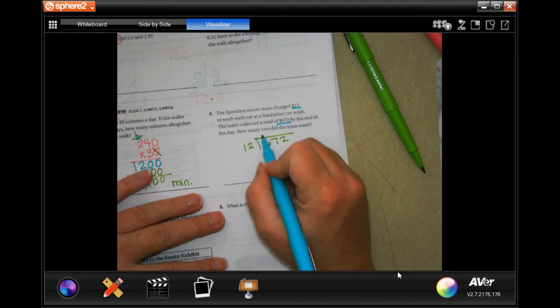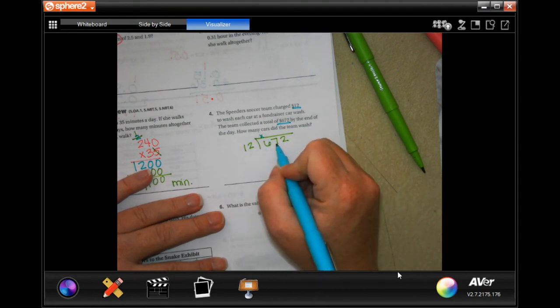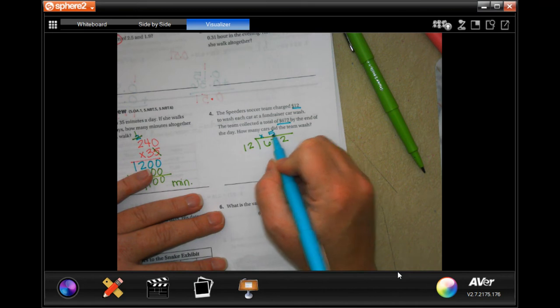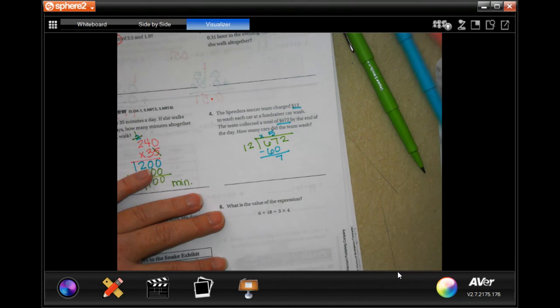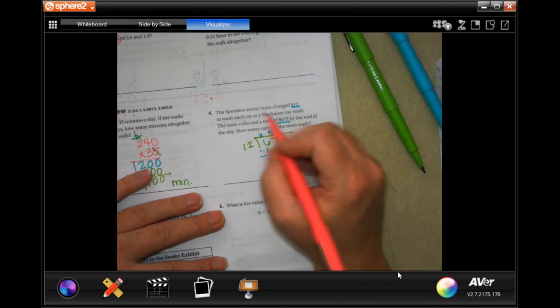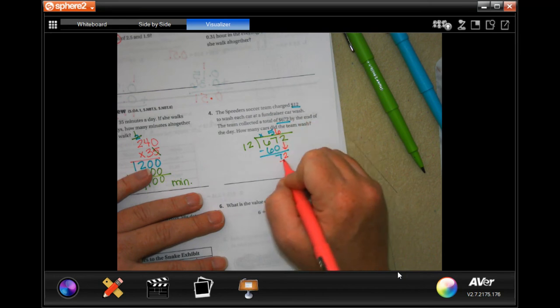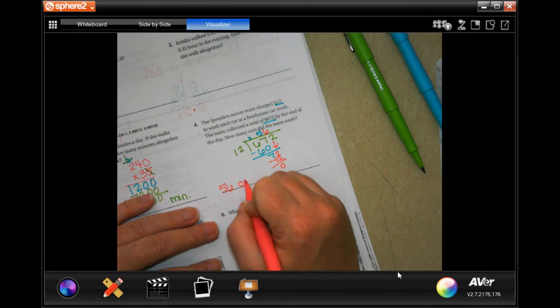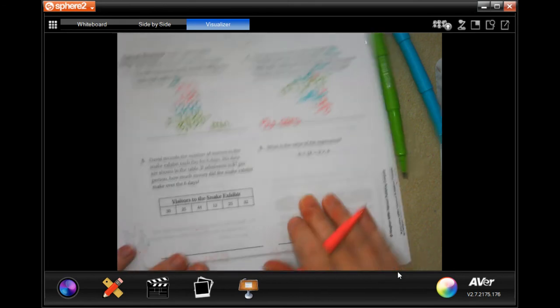So 12 is not going to go into six. 12 will go into 67 five times, five times 12 is 60. Seven is definitely smaller than 12. So we can bring down our two. 12 times six is 72. Subtract is zero. So 56 cars. Not bad.